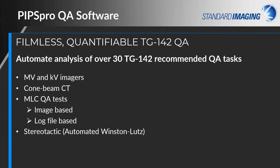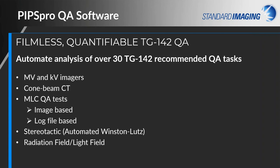The stereotactic module is basically an automated Winston-Lutz for up to eight different angles, providing rotational accuracy and alignment for stereotactic. There are also radiation-light field accuracy and coincidence tests, a star shot analysis for couch, collimator, and gantry, and an IGRT trending and storage functionality. Those are the main QA categories offered in PIPS Pro software.